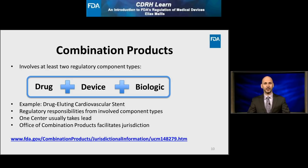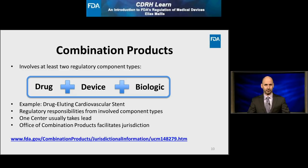Innovative products may feature aspects of devices as well as components such as drugs or biologics. We refer to these as combination products, which by definition involve at least two regulatory component types — drugs, devices, and biologics. An example of a drug-device combination product is a drug-eluting cardiovascular stent, whose two components work together to keep an artery open and prevent restenosis. One FDA center will usually take the lead, and the agency's Office of Combination Products helps facilitate product jurisdiction.